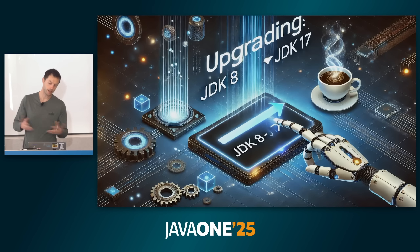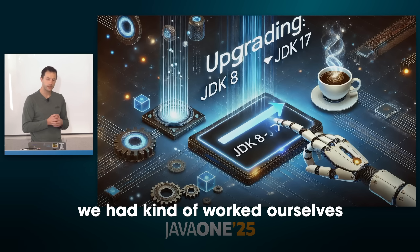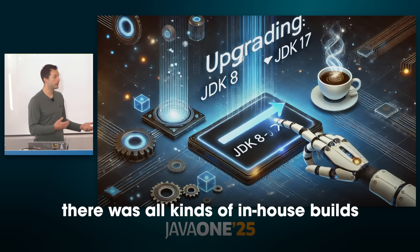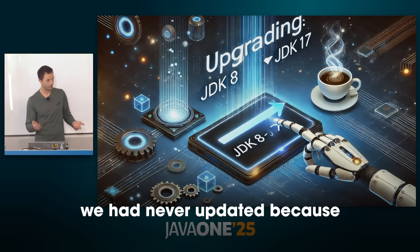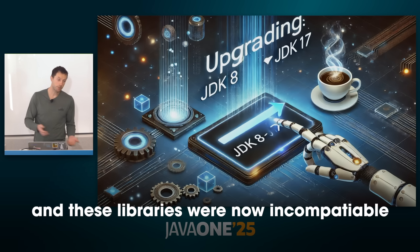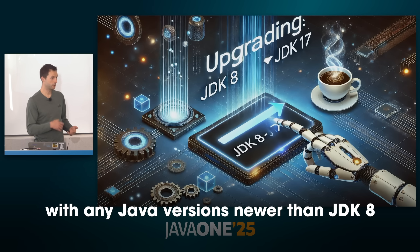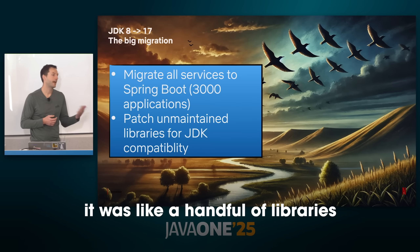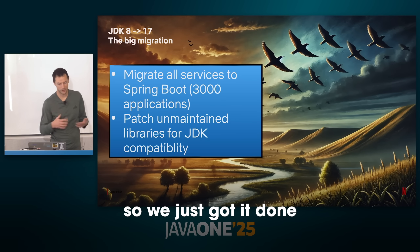Here's the part that'll blow your mind if you're a Java dev: Netflix successfully and willingly upgraded from JDK 8 to JDK 17 a handful of years ago. Paul admitted it was 'pretty embarrassing' — they had worked themselves into a hole with an outdated in-house application framework and old libraries they'd never updated for fear of breaking apps. Those libraries were incompatible with any Java version newer than JDK 8, so service owners couldn't easily upgrade. So they patched all the old libraries themselves, even ones no longer supported.